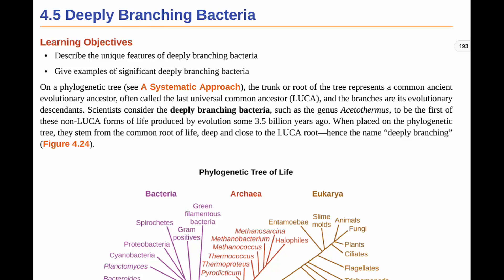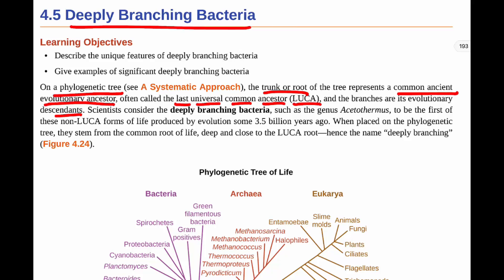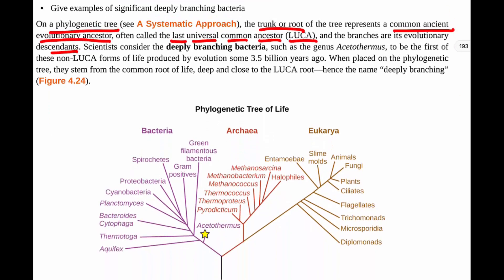All right, so now we're going to take a look at our deeply branching bacteria. We've talked about the gram-negative, the gram-positive, phototrophic bacteria, and now we're going to talk about deeply branching bacteria. So on a phylogenetic tree, as we've seen in previous chapters, the trunk or root of the tree represents a common ancient evolutionary ancestor. They often call this the last universal common ancestor, Luca. And the branches are its evolutionary descendants.